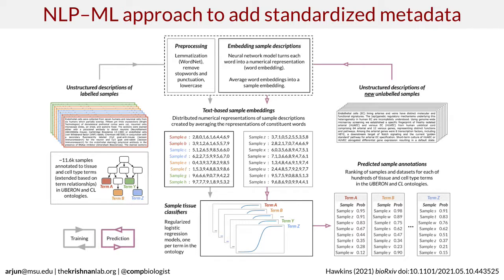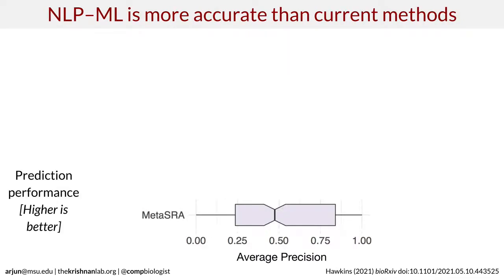To understand how good this model is, we compared it to an existing method called MetaSRA, which uses graph-based reasoning to do sample annotation based on sample text descriptions. MetaSRA achieves a median average precision of about 0.5, meaning that if it predicts 100 samples related to a particular tissue, about 50 are likely to be correct. I'm showing a boxplot because this reflects performance across a large number of tissues, with plenty of variation. In comparison, our method NLPML performs substantially and significantly better, with an average precision of about 0.75 — getting 75 out of 100 predictions correct, which is quite good.